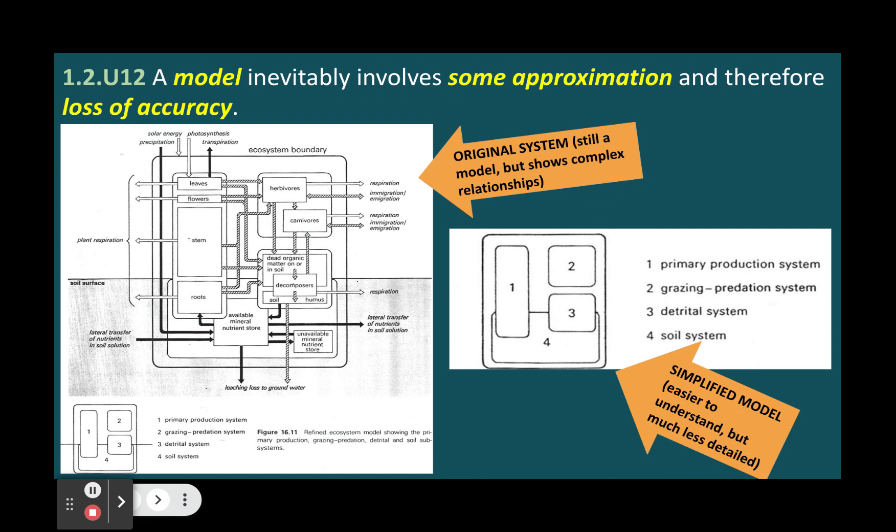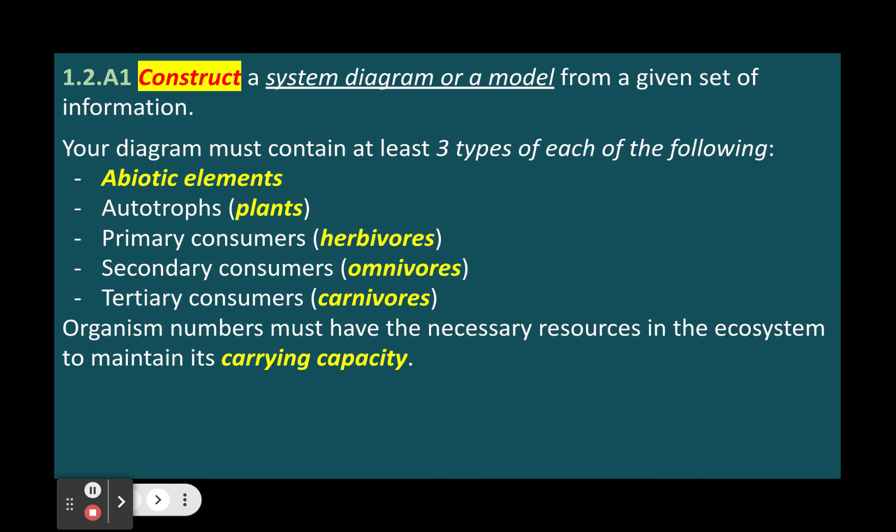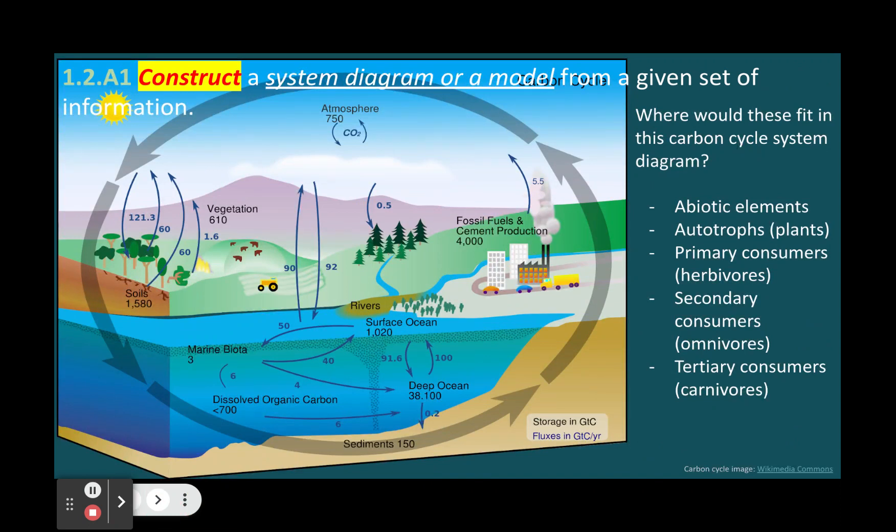To evaluate the use of models as a tool in a given situation, we need to consider the advantages and disadvantages of models for that purpose. For example, climate change predictions are based on computer models that simulate the interactions of different factors that affect the Earth's climate, such as greenhouse gases, solar radiation, clouds, oceans, land use, and human activities.